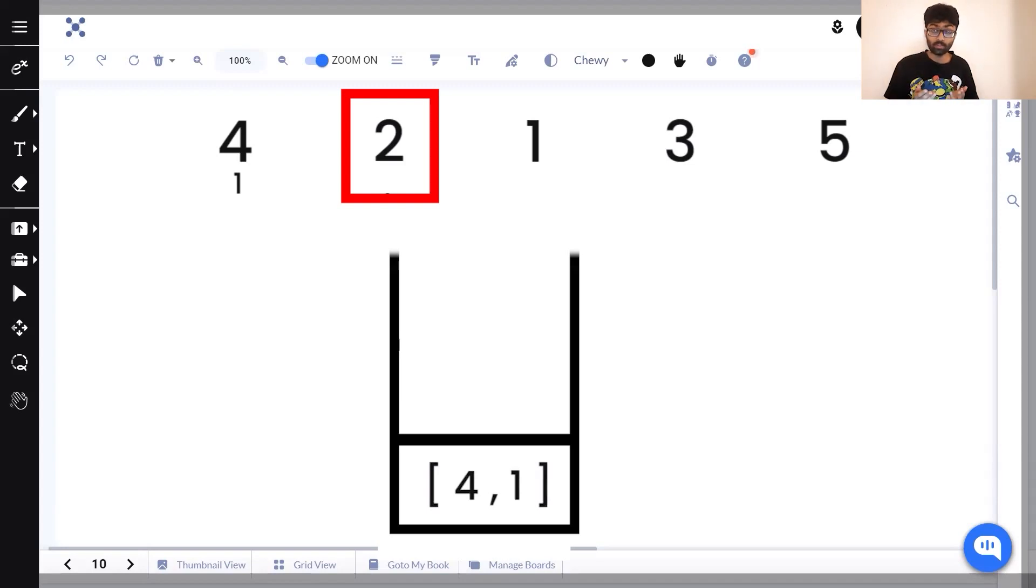If we had a subset of 4 2 where 2 was the rightmost element, it would be invalid. Which is why 2 goes above 4 in our stack with the count of 1. Our stack is going to be in decreasing order from bottom to top.